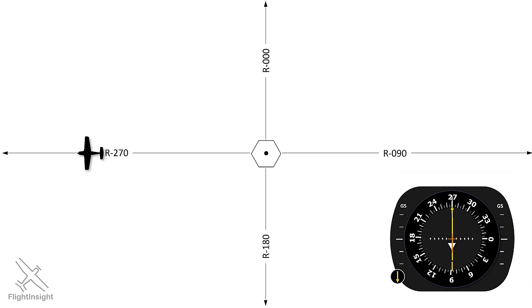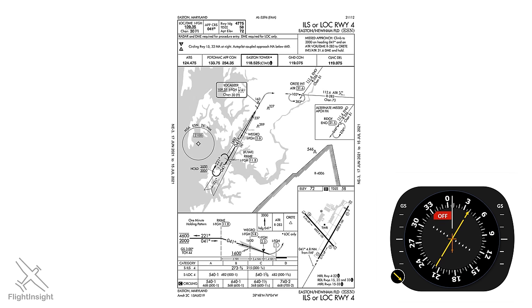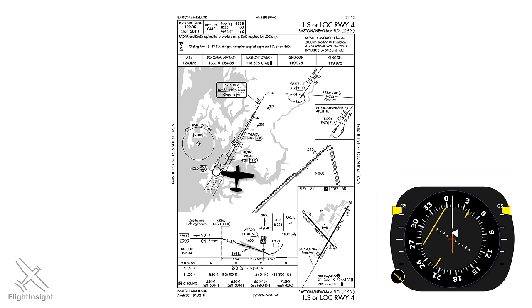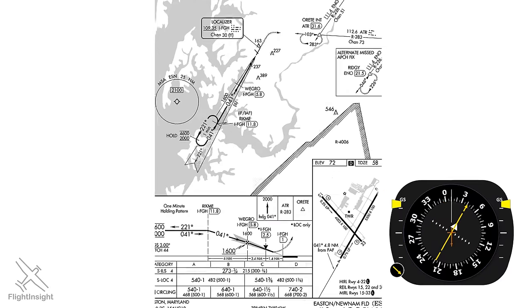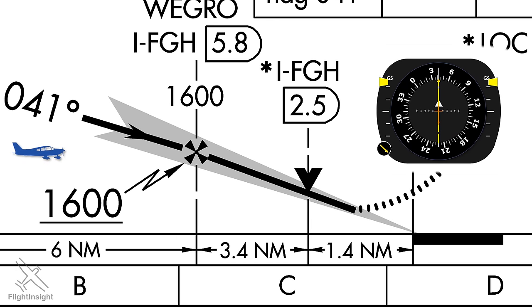Let's examine one more function of the HSI. On a precision approach like this ILS, we're able to use the green CDI needle as our localizer, but we're also able to get a glide slope indication. Here we are approaching the course. Initially, if our HSI is tuned to the localizer frequency, we won't get any indication until we get closer — notice the red OFF flag. As we approach though, the HSI will come alive. The red flag goes away, the green needle deflects to the left since the approach course is still to our left, and those two yellow glide slope indicators appear on the top next to the GS for glide slope.